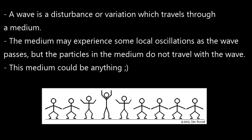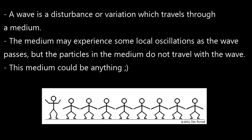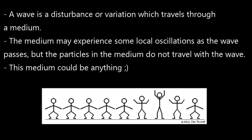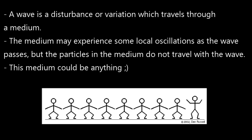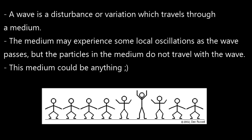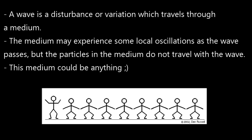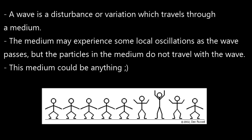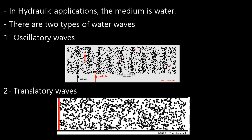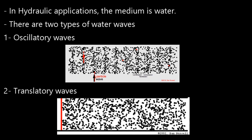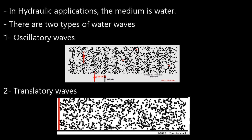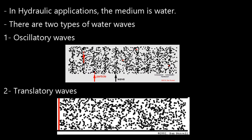So let's start. What is a wave? A wave is a disturbance or variation which travels through a medium. The medium may experience some local oscillations as the wave passes, but the particles in the medium do not travel with the wave. This medium could be anything. In hydraulic applications the medium is water. There are two types of water waves: oscillatory waves and translatory waves.